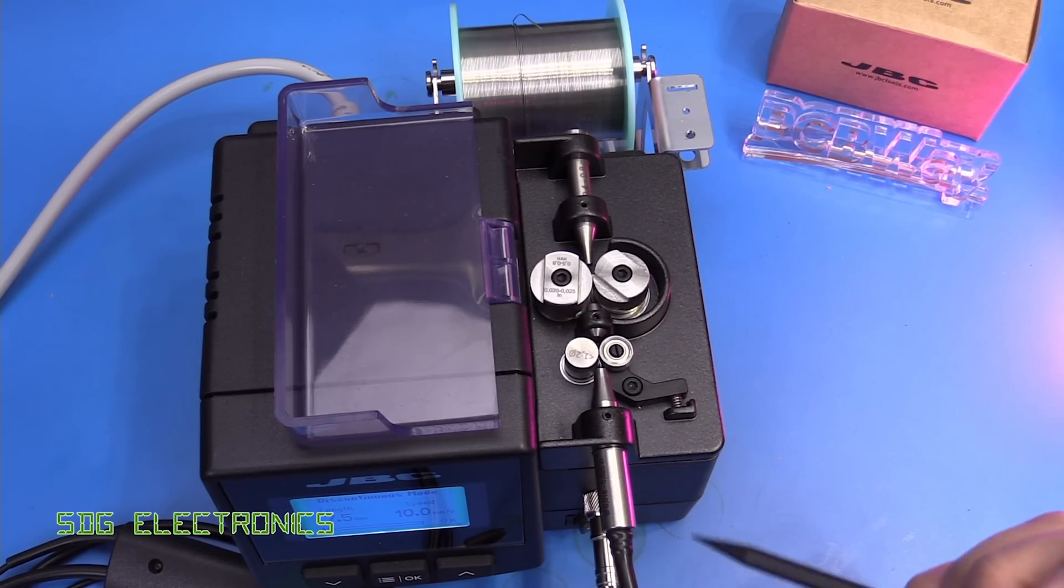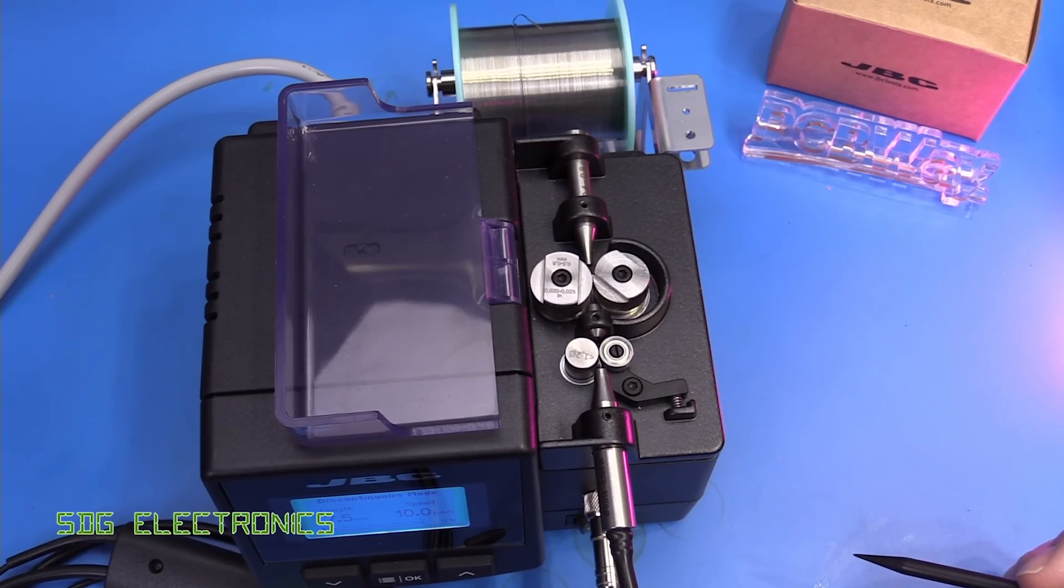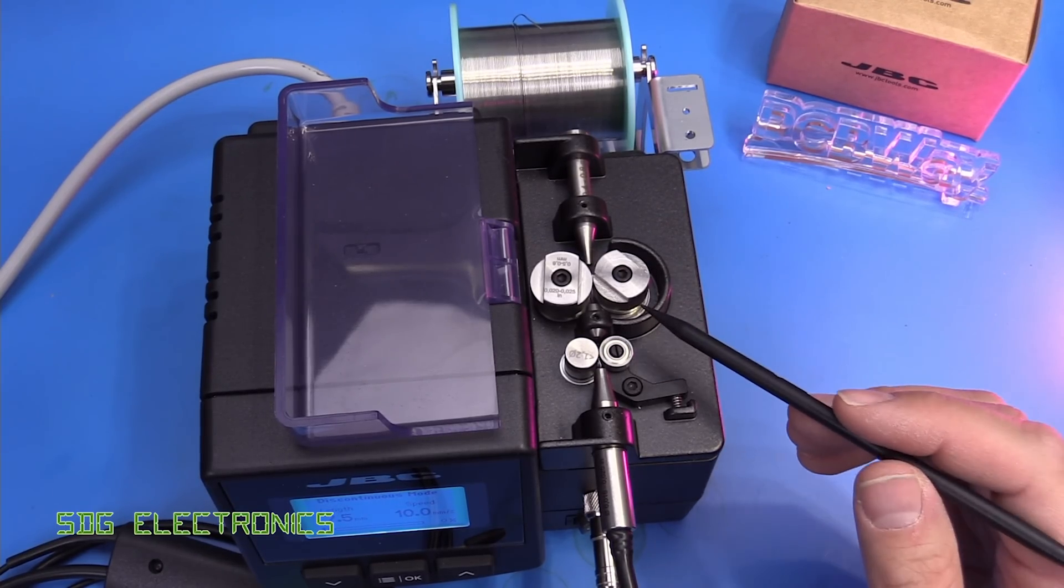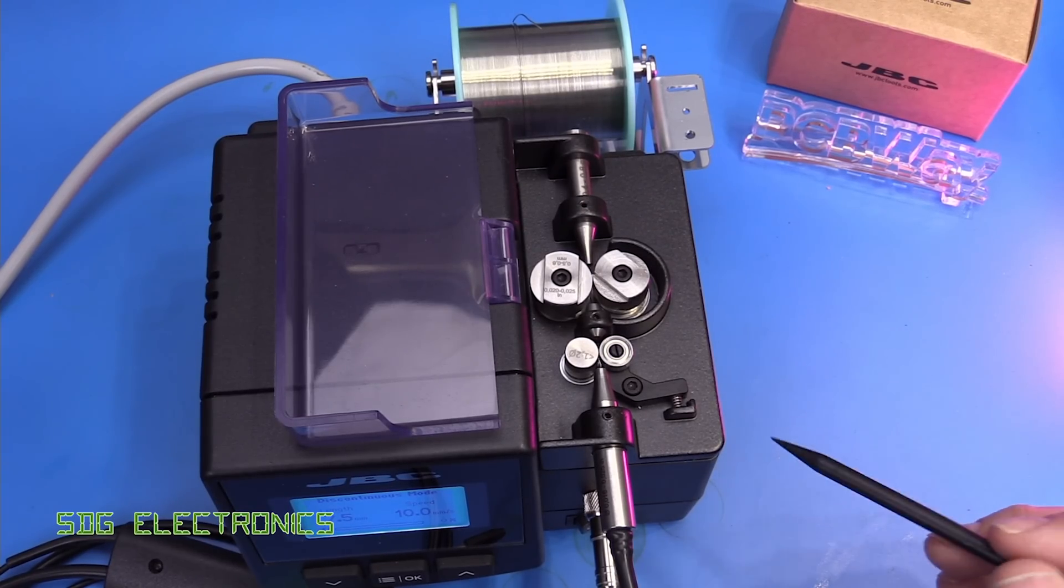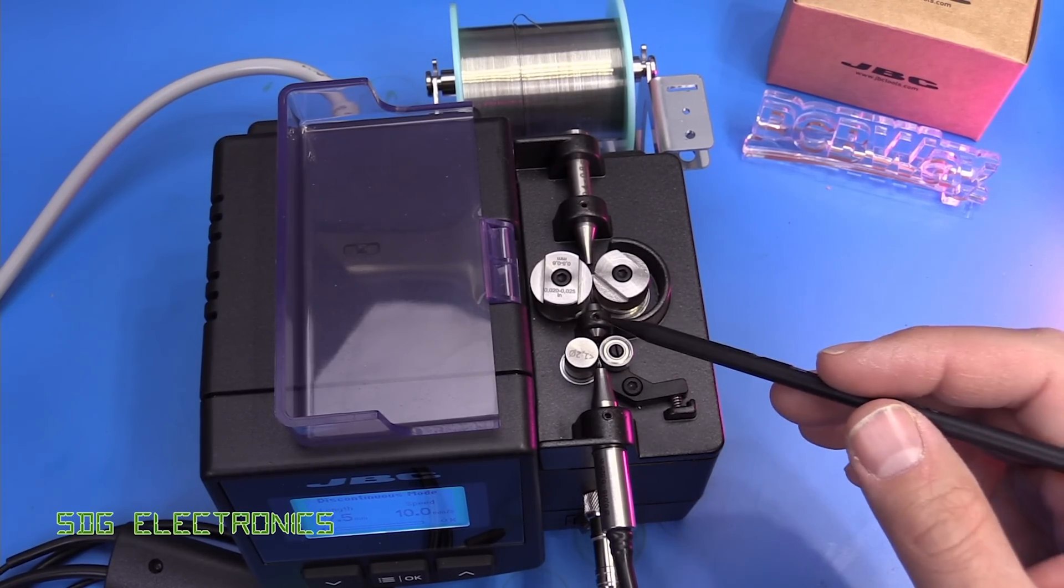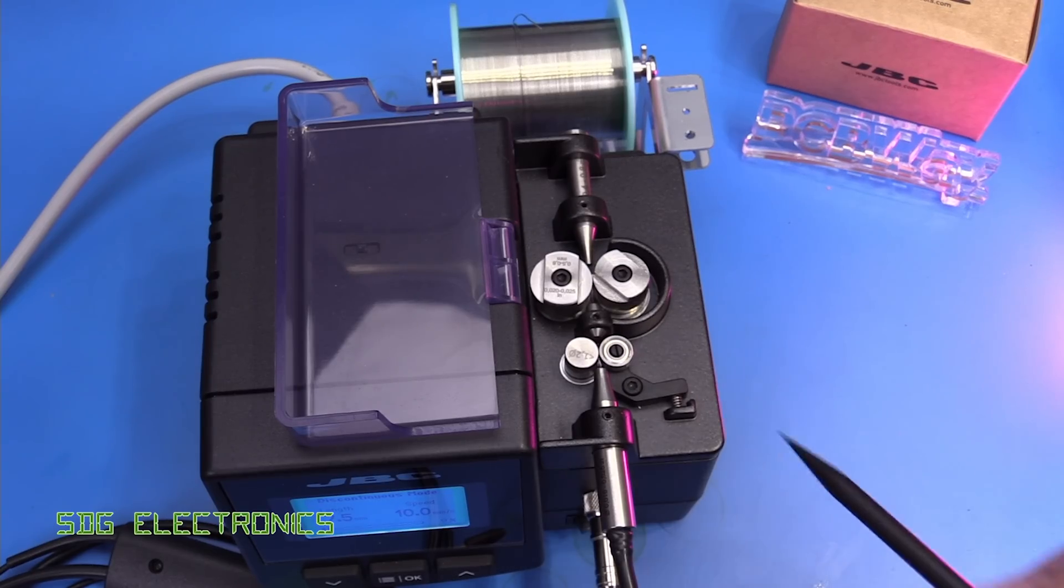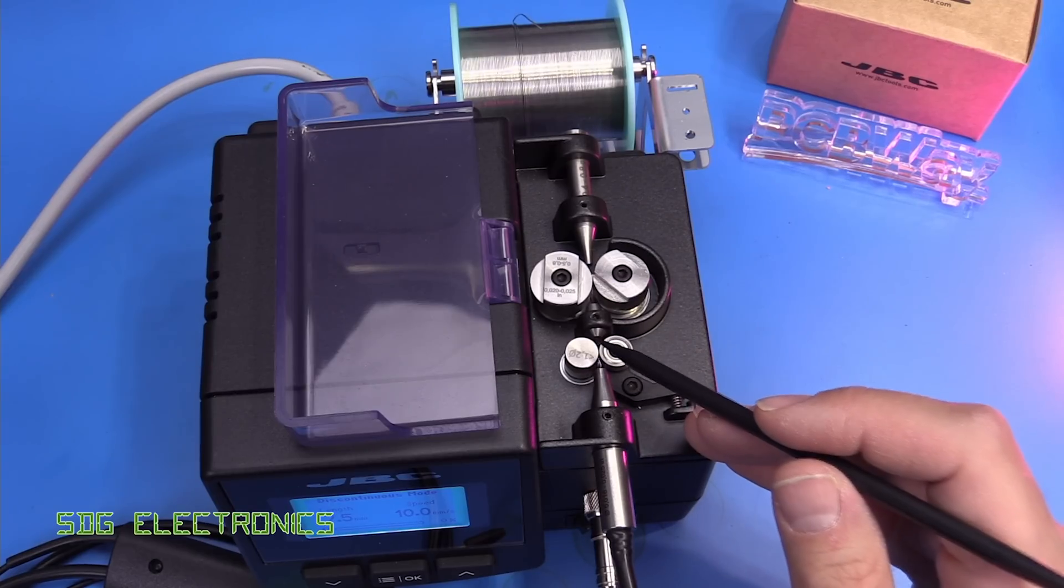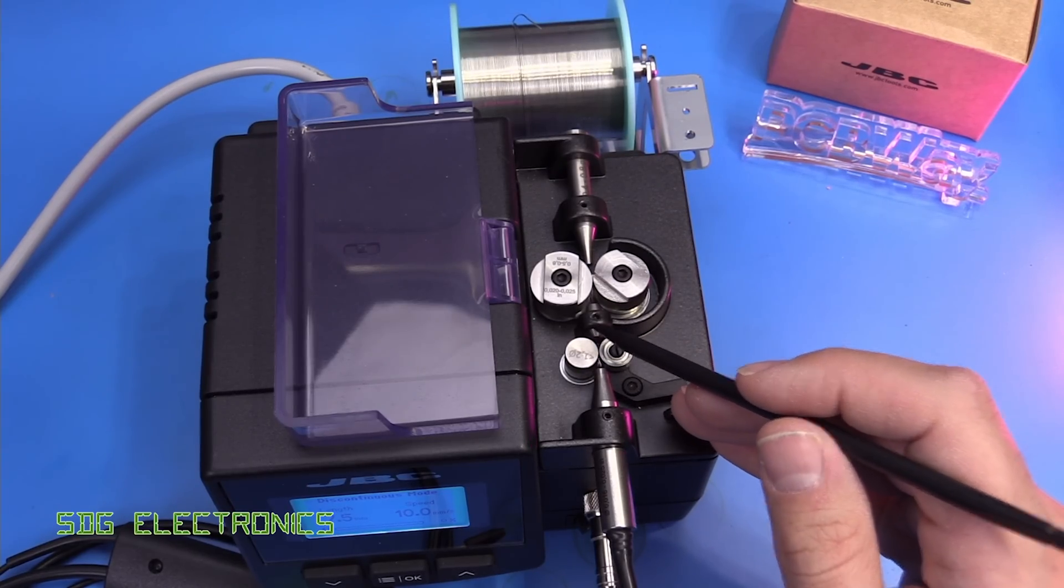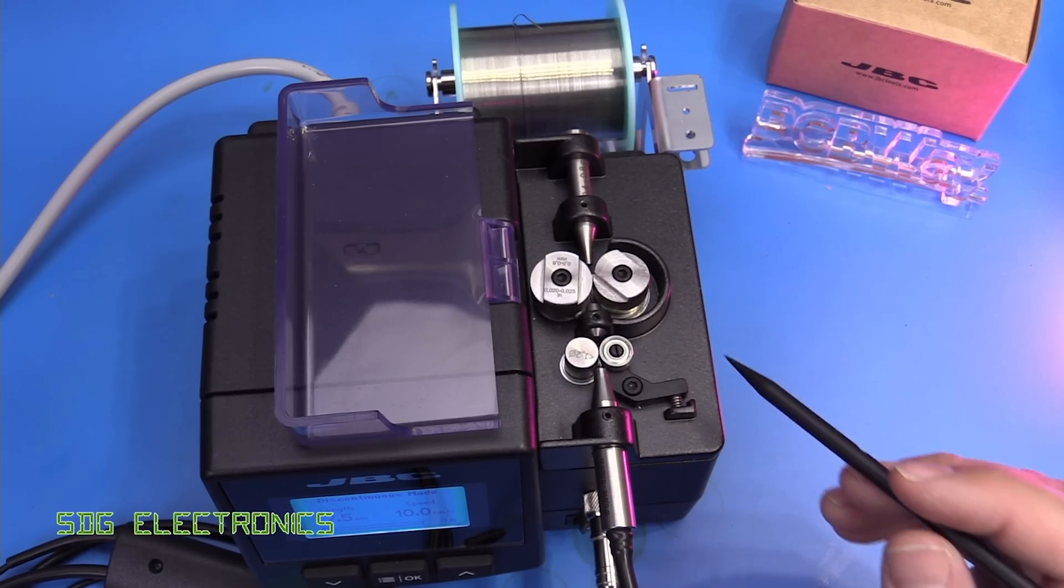As a lot of people mentioned, in things like 3D printers after the drive rollers you completely contain the filament with tubing to stop it having that ability to crumple. But we've got quite a few areas here that are open and that's where we were seeing the solder wire getting bunched up.